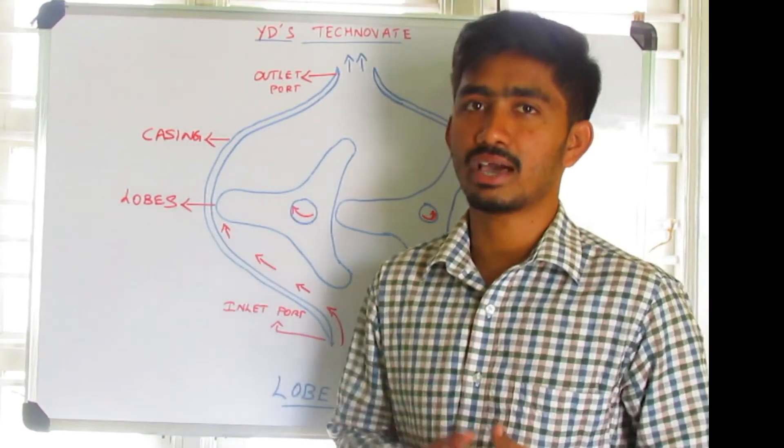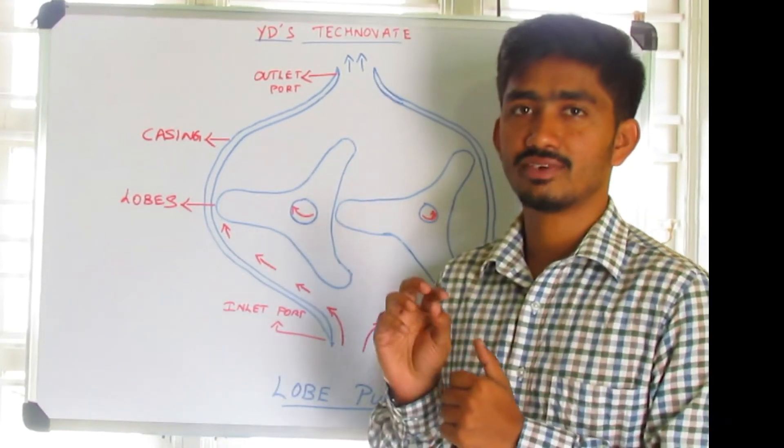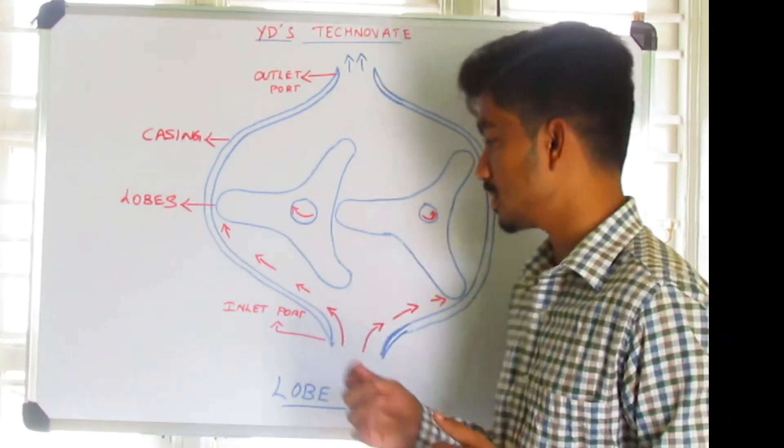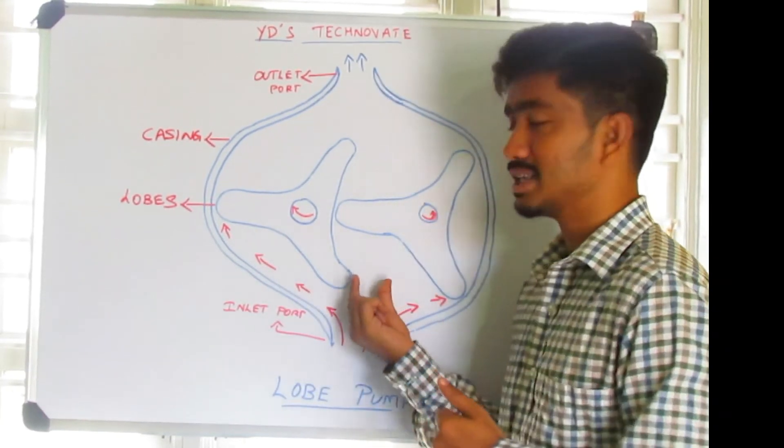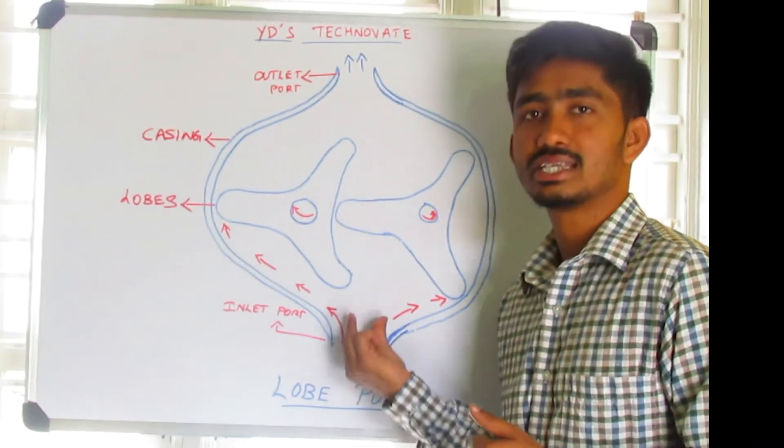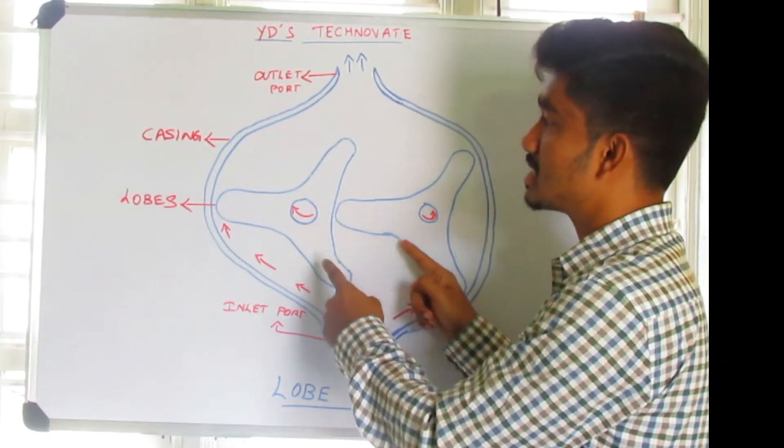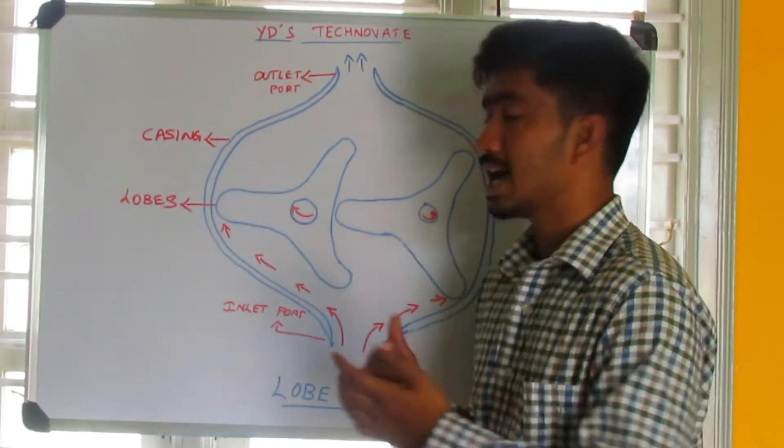The same thing happens here in this lobe pump too. When these lobes are driven externally with the help of an electric motor, there will be some partial vacuum created, so by this some oil is sucked from the reservoir inside the pump.